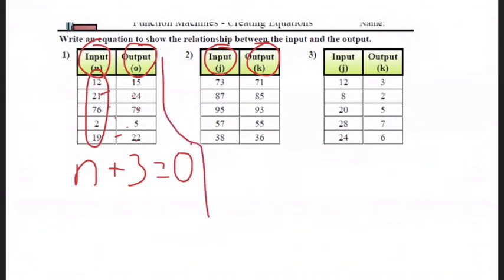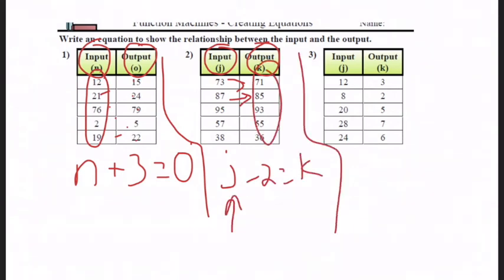All right, so for number 2, we have j. We have to do something with j to get k. So we're going to subtract 2 equals k. And remember, k is your output. So this is the input, this is the output, this is the rule of what we're doing.